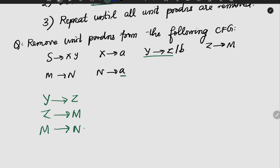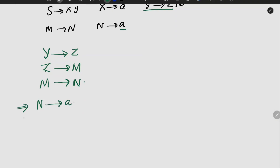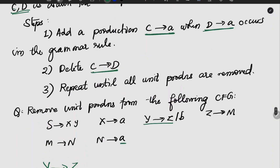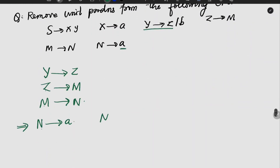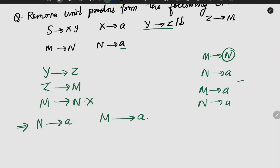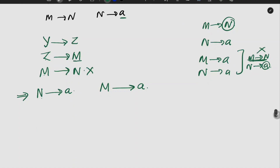Since M gives N and N gives A, we can write M gives A. Since M gives A, Z also gives A. Since Z gives A, Y also gives A. So the chain Y gives Z, Z gives M, M gives N, N gives A resolves to each variable deriving A directly.